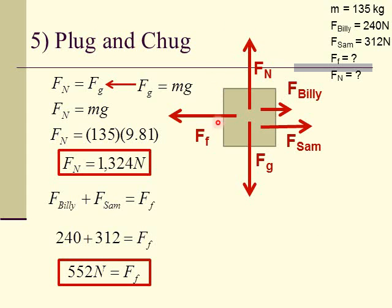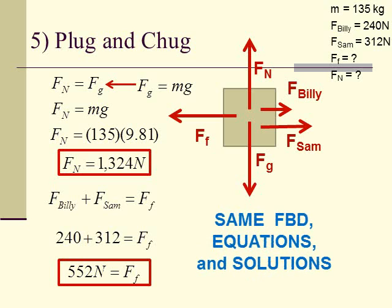When we draw the free body diagram, the net force is still zero horizontally so the two applied forces still equal friction. The net force vertically is still zero so normal force equals gravity. We come out to the exact same equations and get the exact same solutions. Everything is identical to the previous problem — same free body diagram, same equations, same solution.